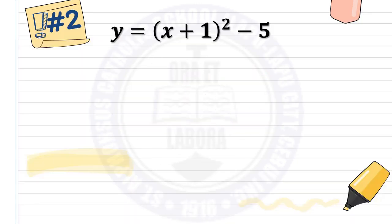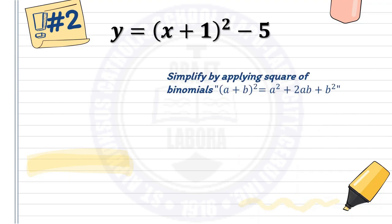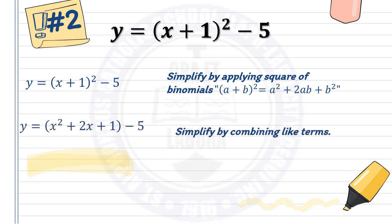Number 2: y equals quantity x plus 1 squared minus 5. Applying the square of binomial gives y equals x squared plus 2x plus 1 minus 5. Then combining like terms, 1 minus 5 is negative 4. So the general form is y equals x squared plus 2x minus 4.